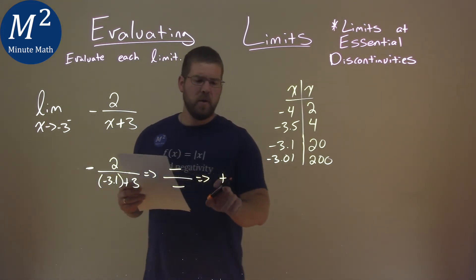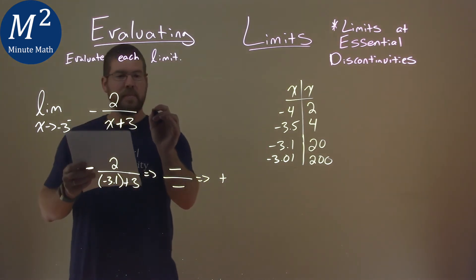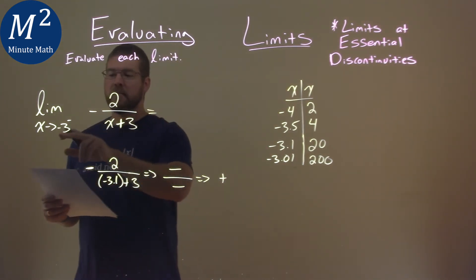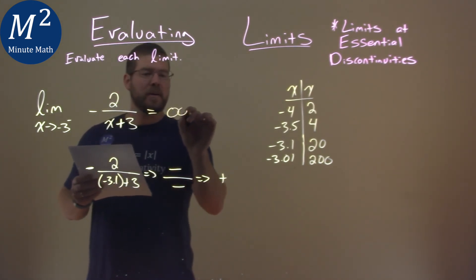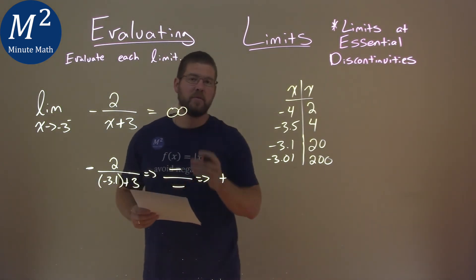And so with that, with our table here, we can say that this limit is going to, when x approaches negative 3 from the left, a positive infinity, and that is our final answer.